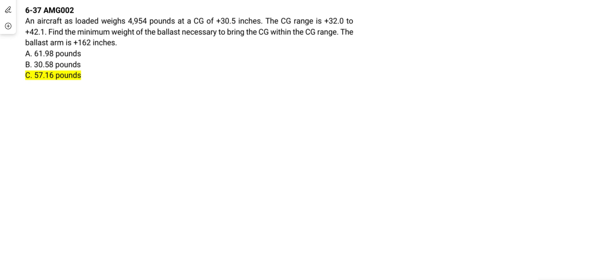Find the minimum weight of the ballast necessary to bring the CG within the CG range. The ballast arm is positive 162 inches.